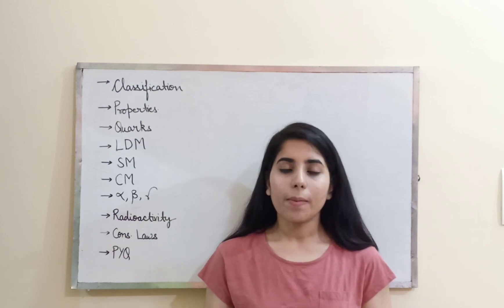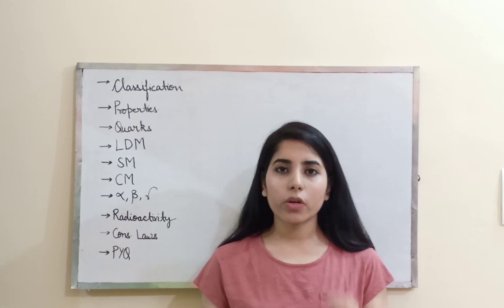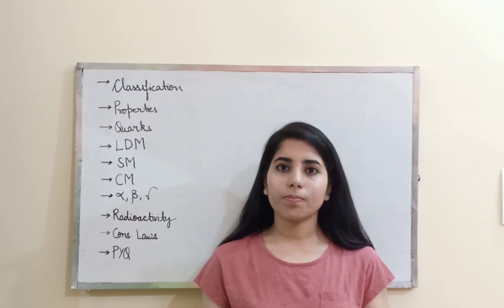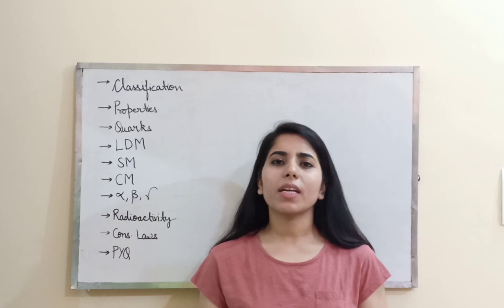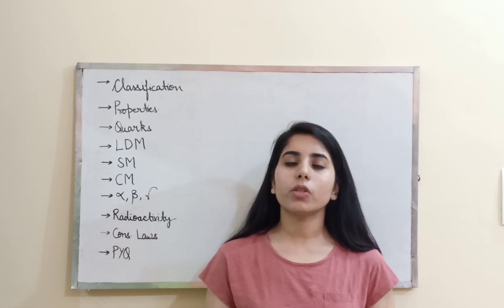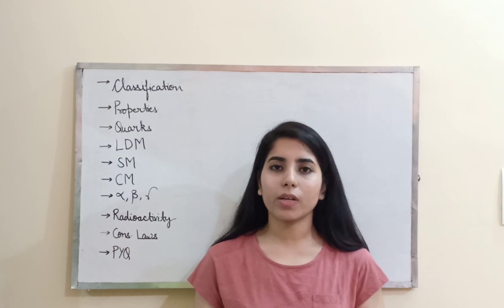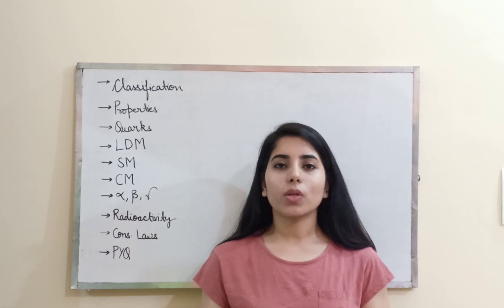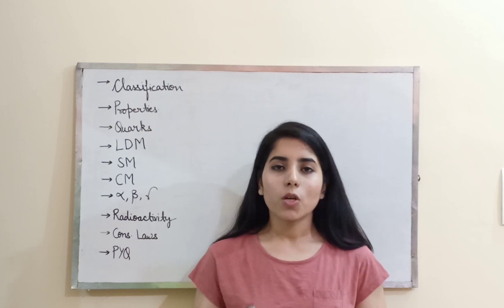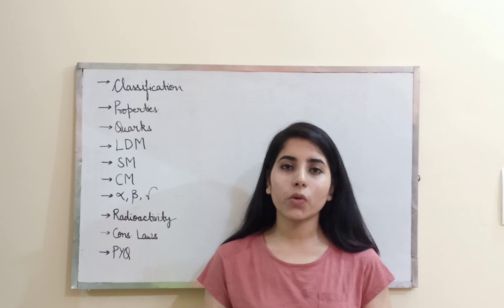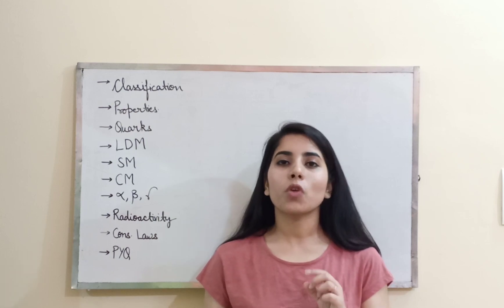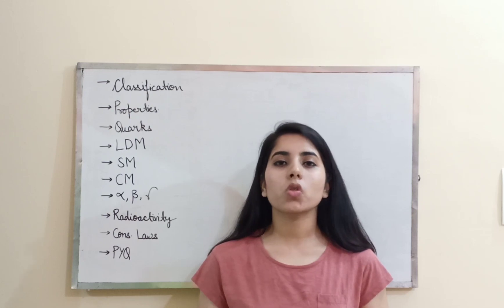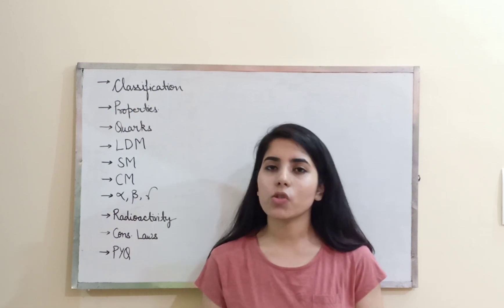You should also prepare radioactivity, which will help you with questions on half-life and decay constant. Any equations related to radioactivity should be well-prepared so you can solve questions based on them. There are also alpha, beta, and gamma decays with their associated selection rules. I have previously uploaded a video on the selection rules of gamma decay — if you haven't watched it, do watch it, as there are good chances of getting questions based on gamma decay selection rules.